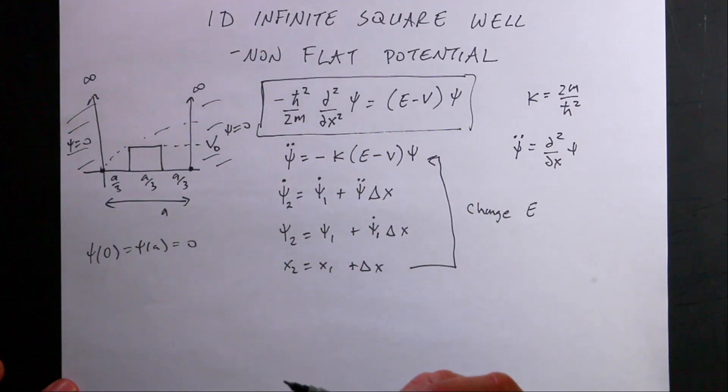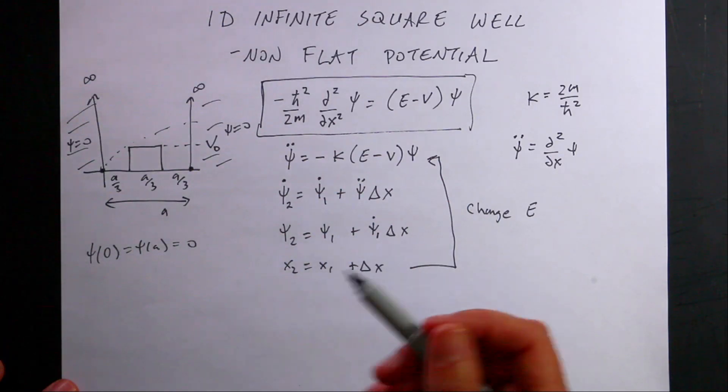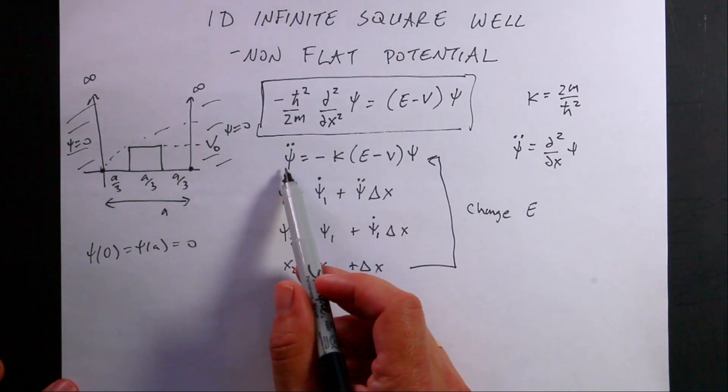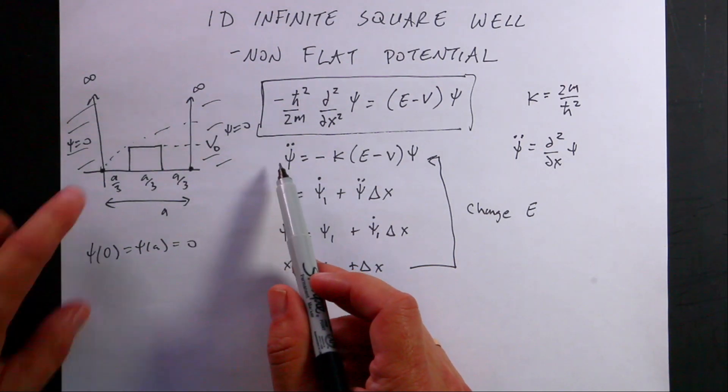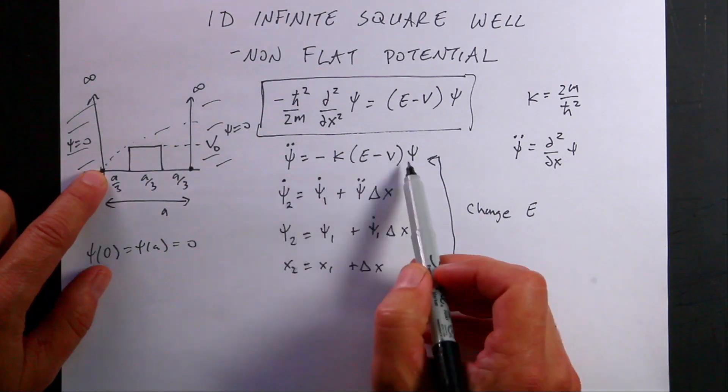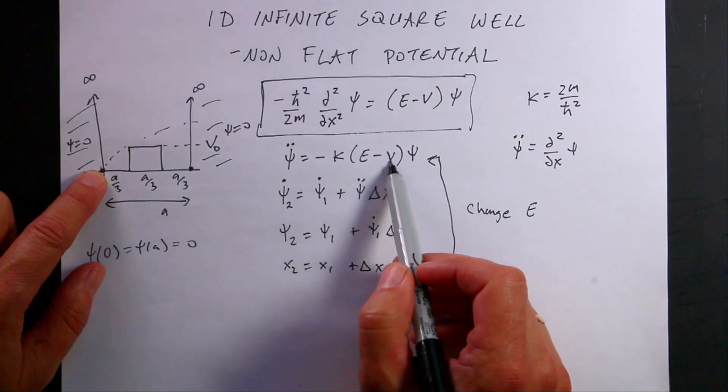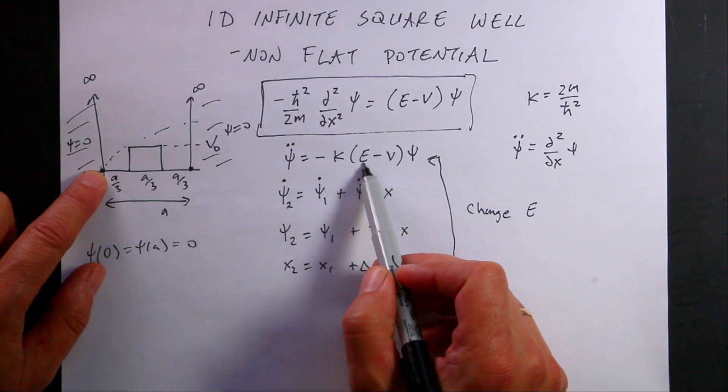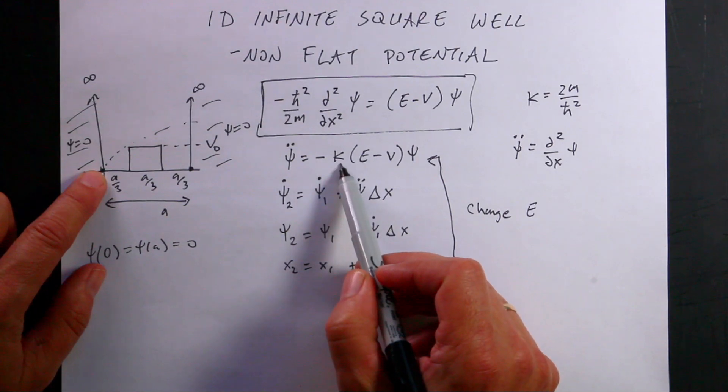So this is how we do a numerical calculation. This is the Euler method. I'm going to start with the second derivative. I can calculate the second derivative right here at the beginning because I know the value of psi. And I know the value of the potential and I know the value of E. I pick that.